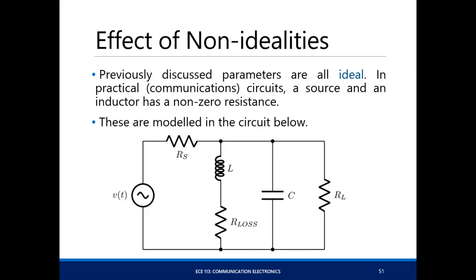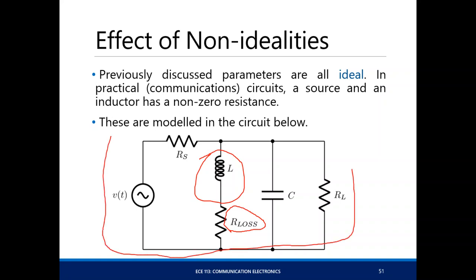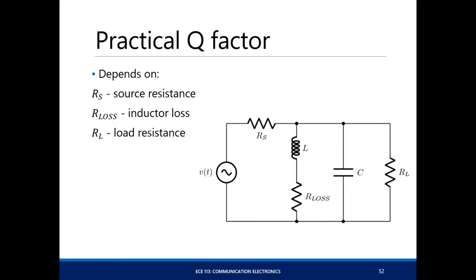Now let's consider the effect of non-idealities. As discussed in the previous lecture, components at RF can be unpredictable, and the most notorious is the inductor. The inductor has a lossy resistance component, which we model as a series resistance. The practical Q factor of this circuit depends mostly on the source resistance, load resistance, and this lossy resistance.